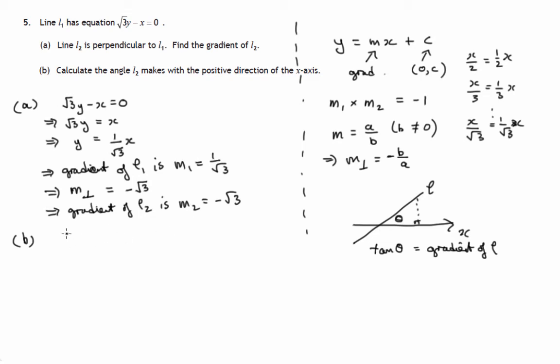The tan, well, we'd better say what theta is. Let the angle be theta. Then we know that the tan of theta is equal to the gradient, which is equal to negative root 3.